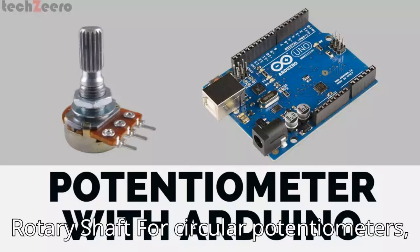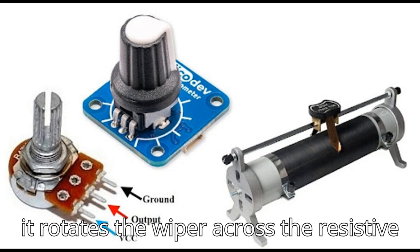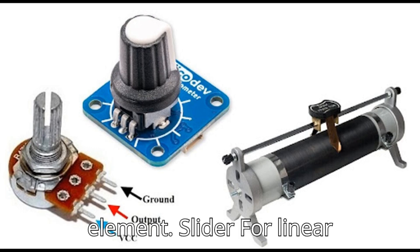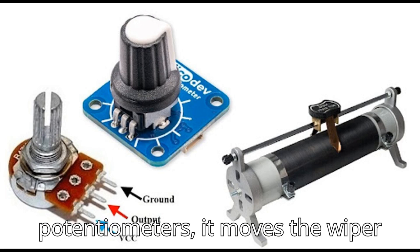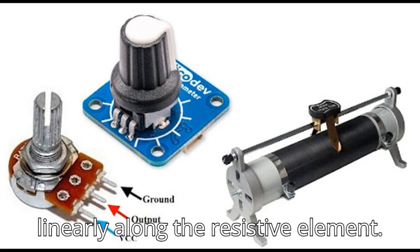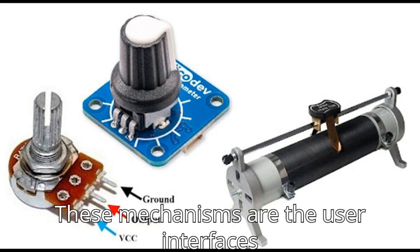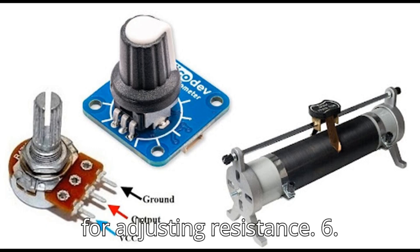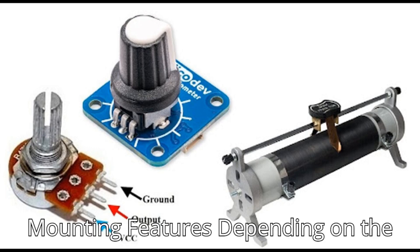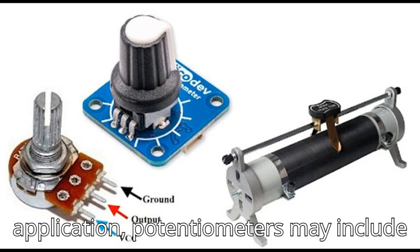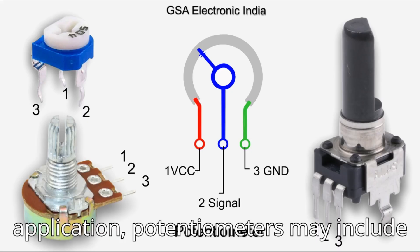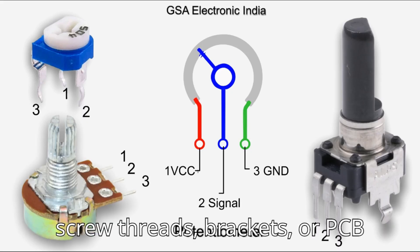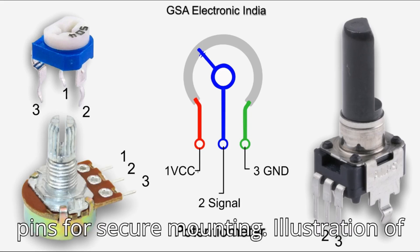Fifth, the control mechanism. For rotary potentiometers, a rotary shaft rotates the wiper across the resistive element. For linear potentiometers, a slider moves the wiper linearly along the resistive element. These mechanisms are the user interfaces for adjusting resistance. Sixth, mounting features: depending on the application, potentiometers may include screw threads, brackets, or PCB pins for secure mounting.